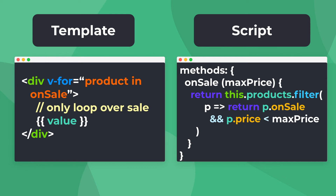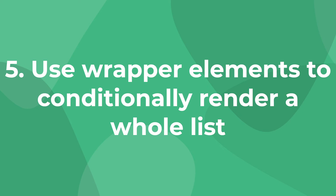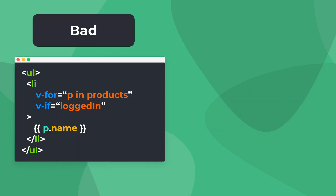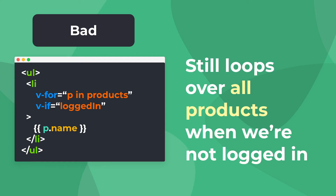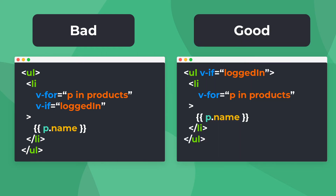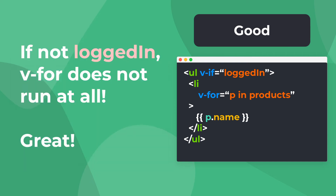Another alternative to joining a v-for with a v-if is when we're trying to decide whether or not to render a list at all. For example, if we only want to render a product list when a user is logged in, you might write code like this — but even here we're still looping over all products even if the user isn't logged in. To fix this, we can move the v-if from the element with the v-for to the element wrapping the v-for, such as the unordered list. Now if the user is not logged in, the v-for loop will not run at all.